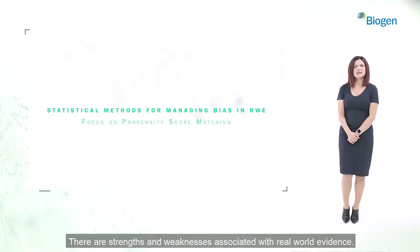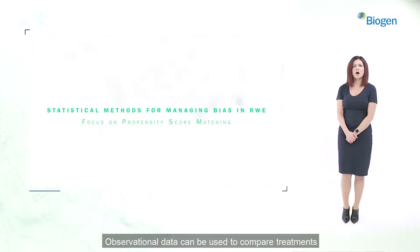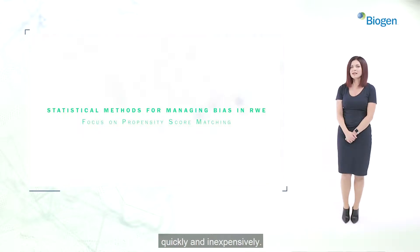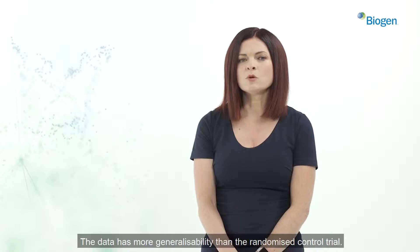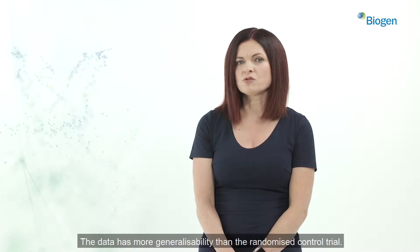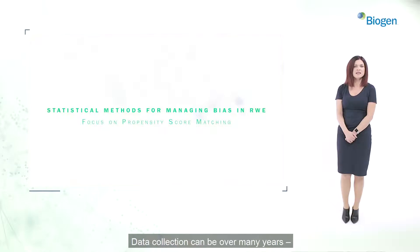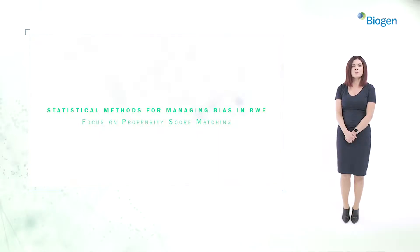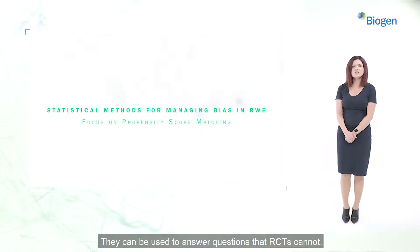There are strengths and weaknesses associated with real-world evidence. Observational data can be used to compare treatments quickly and inexpensively. The data has more generalizability than the randomised control trial. Data collection can be over many years, much longer than the RCT, and they can be used to answer questions that RCTs cannot.